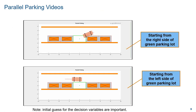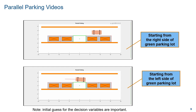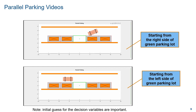Here are two videos for parallel parking. You can either start from the right side of the target parking lot or from the left side. The initial guess for the decision variables is important for nonlinear MPC to find the final solution, because fmincon relies on the initial guess under the hood.